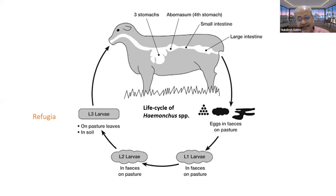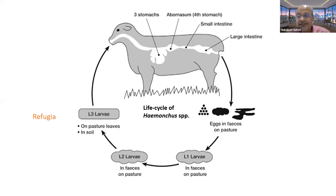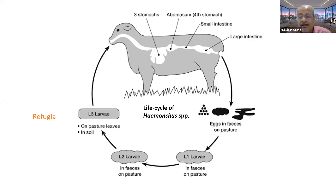And again, these L3 stages are also very clever in the sense that they also migrate onto the grass blades early in the morning and late in the evening, so that they are available for sheep and goats to pick them up and the life cycle continues in the final host.